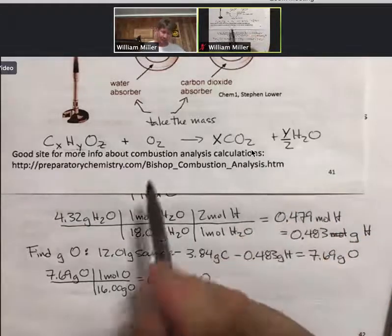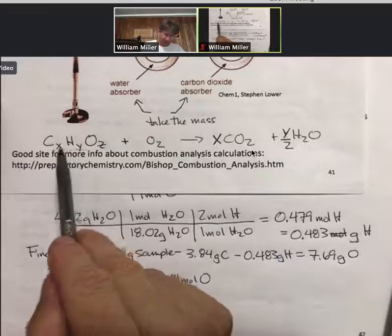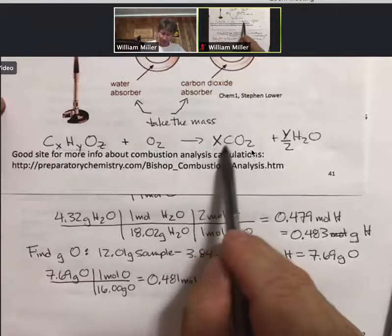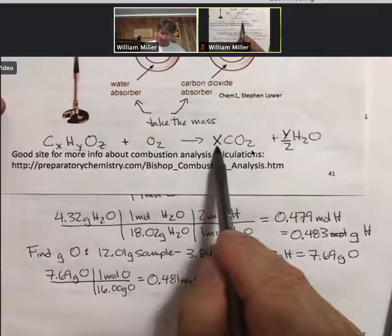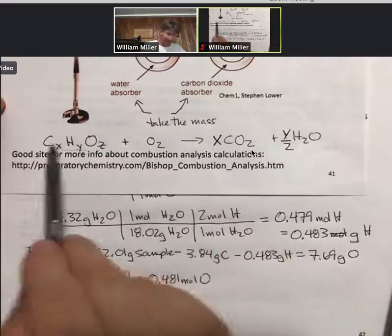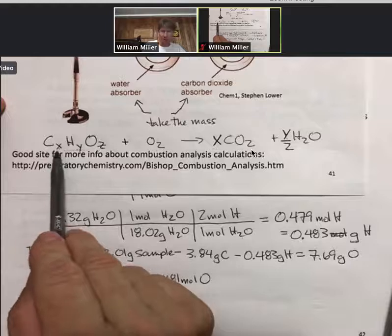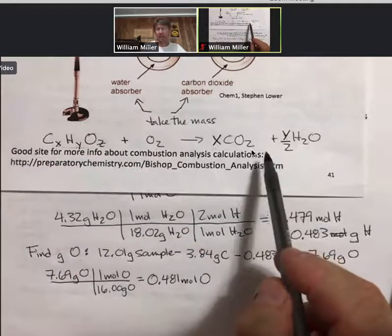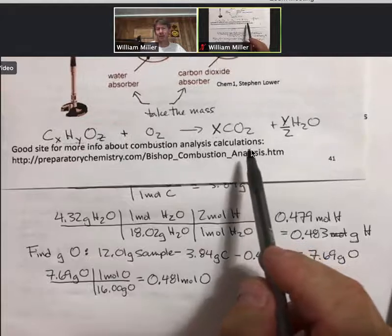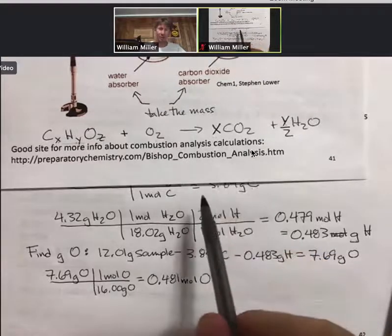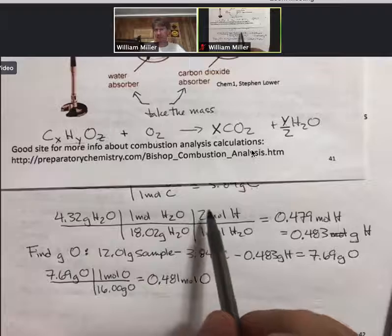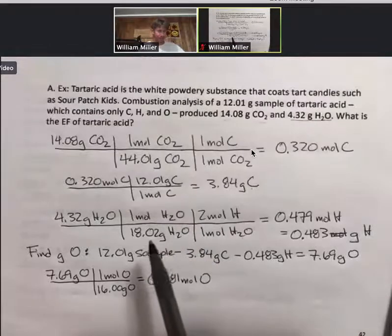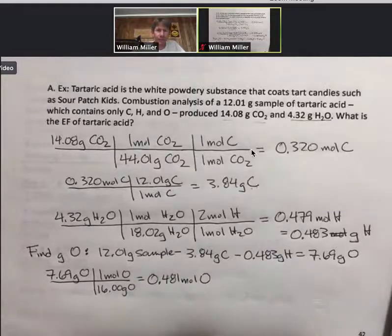The only thing I want you to get out of this here - and we'll talk a lot more about how to balance reactions, I think actually in lecture outline two - the only point I want you to get is how I get the relationship between the grams and moles of CO2 and find the moles of carbon in the unknown, and the same thing for hydrogen. Other than that, this is not a balanced reaction and we can't use it to do any other calculations until we balance it.